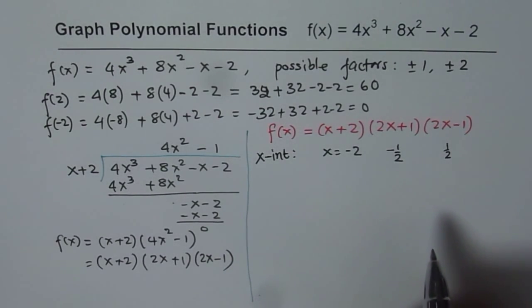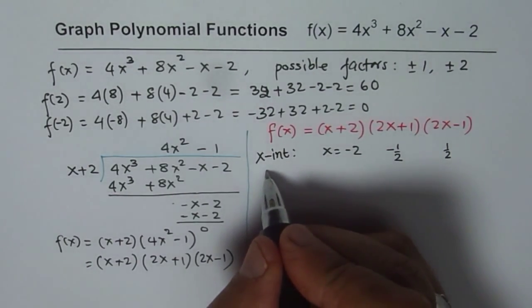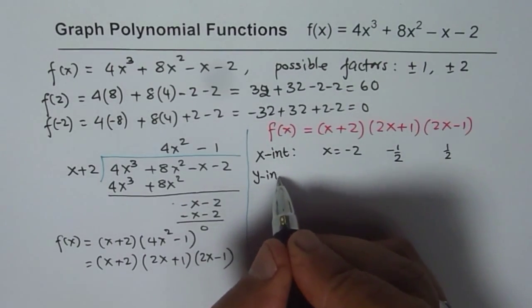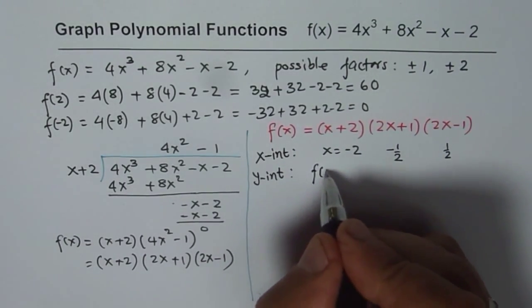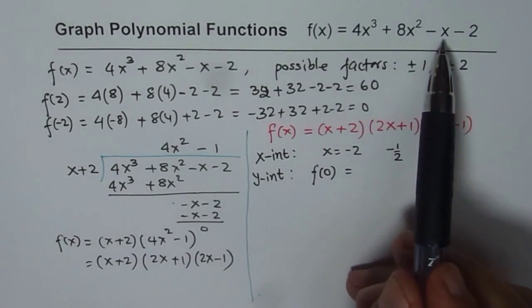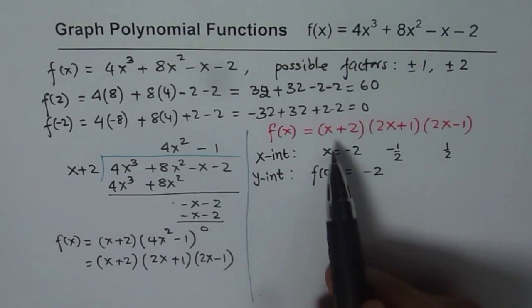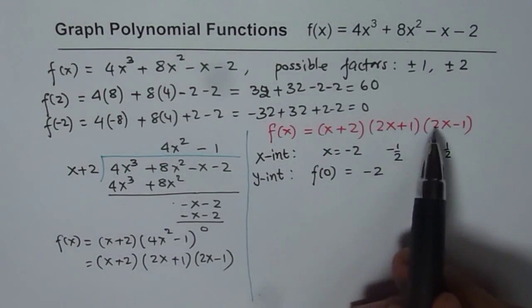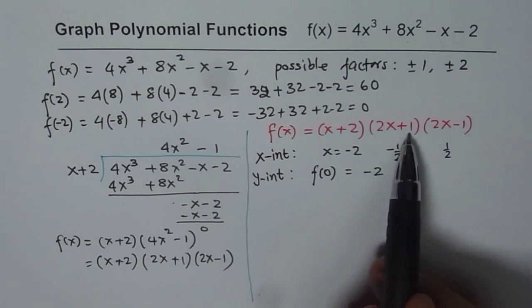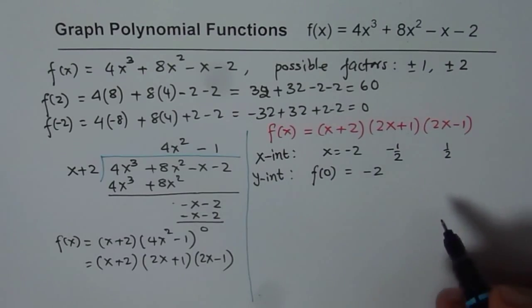Another important thing which you need from your function is y-intercept. y-intercept is value of the function at x equals to 0. So that means you are trying to find what is f of 0 equals to. If I put f of 0 in your standard equation, I get minus 2. You could substitute in this equation also, 0, 0, 0. So you get 2 times 1 times minus 1, which is minus 2. So we got our x-intercept, and we have the y-intercept.